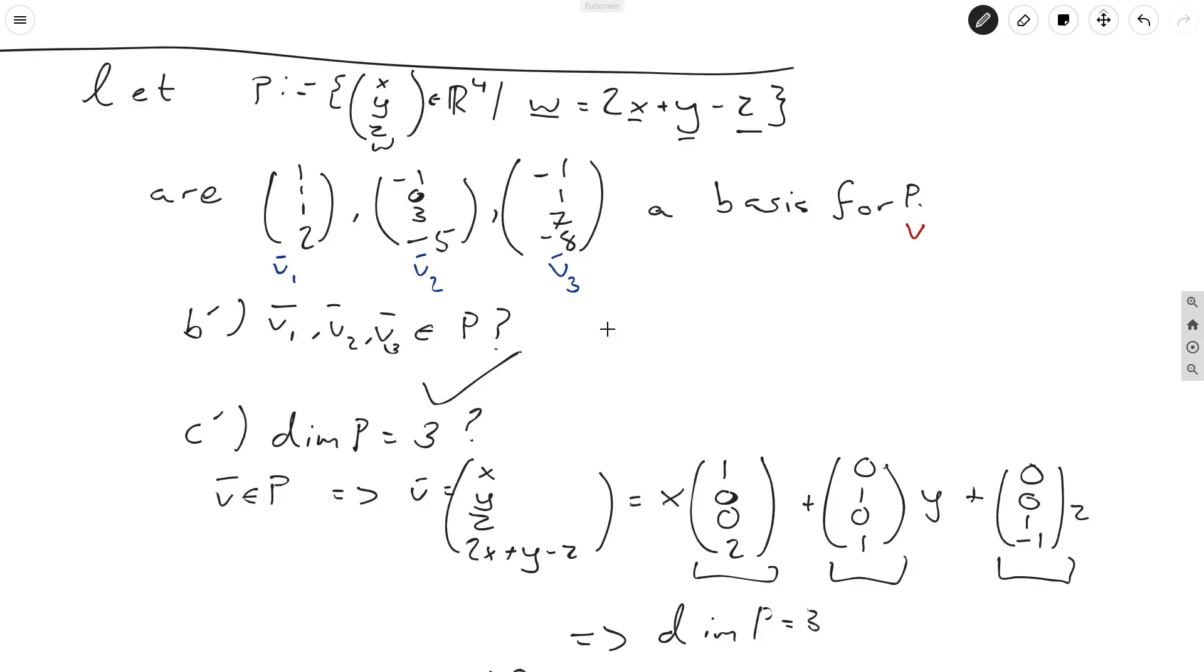Well, if we have a vector in P, and this is the general strategy I would recommend for you, you want to take an arbitrary element of your set, P. So in our case, we're going to take v. And v has to be of this form, (x, y, z, 2x + y - z). That's because its fourth coordinate, the rule for being in P, which is written out here, says that its fourth coordinate must be given by this formula.